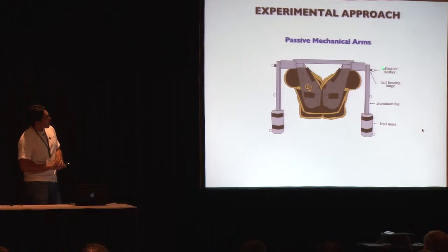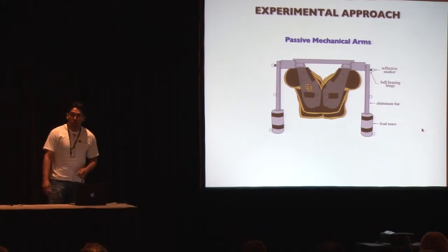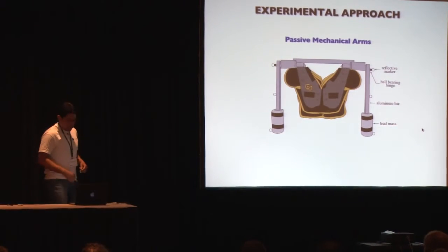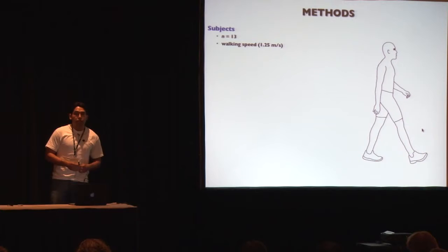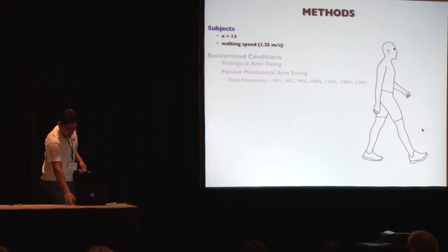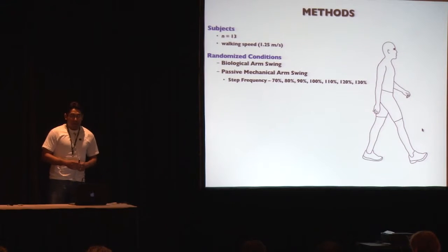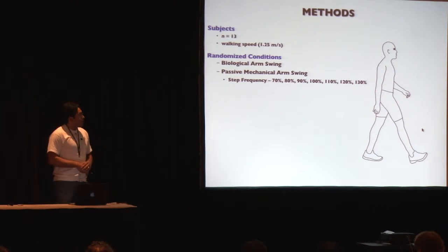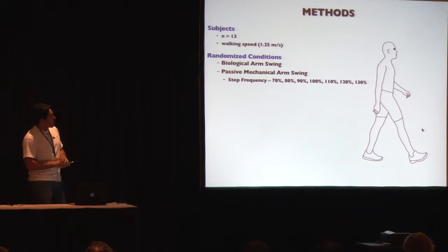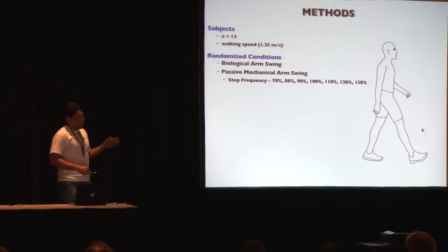We placed reflective markers at the shoulder joint, the middle of the bar, and at the end of the lead mass to measure arm swing amplitudes while subjects walked with our passive mechanical arm swing device. For this study we had 13 subjects walking at a fixed speed of 1.25 meters per second, with two sets of conditions: walking with their biological arms, and walking with our passive arm swing device across a range of step frequencies from 70% to 130% of each subject's preferred step frequency.